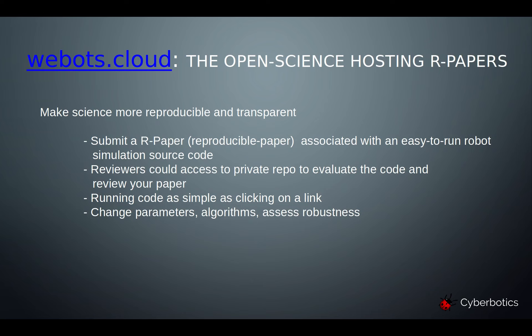Webots.Cloud supports OpenScience by hosting reproducible papers. OpenScience tries to make science more reproducible and transparent. For example, you can submit a reproducible paper associated with an easy-to-run robot simulation through code. Reviewers could access a private repository to evaluate the code and review your paper — running the code is as simple as clicking on a link. You can also provide a robot window to change parameters and algorithms, letting reviewers assess the robustness of your code.